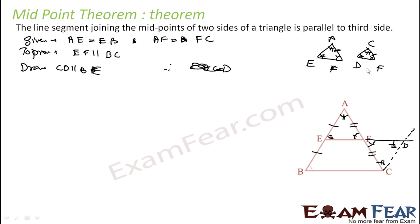Since the triangles are congruent, EF equals DF, and AE equals CD. Since AE equals EB (given), we have EB equals CD. And EB is parallel to CD by construction. Therefore BEDC is a parallelogram. Since it is a parallelogram, EF is parallel to BC.